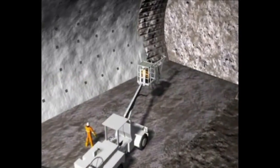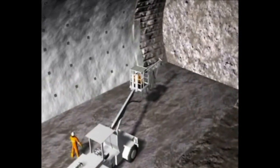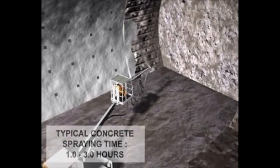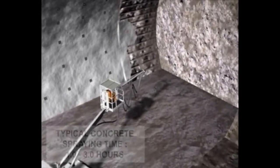Spraying: a shotcrete machine will spray a suitably designed mixed concrete to the rock mass to seal off the surface and to make the surface smooth.